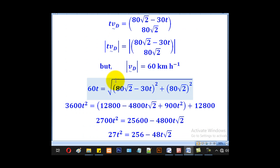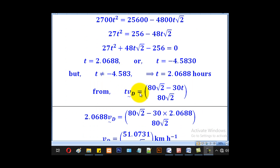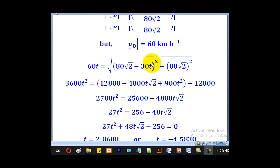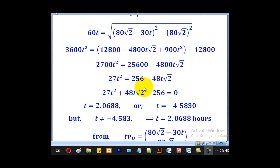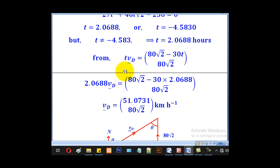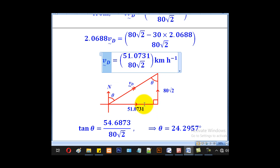Now when we substitute our T in this equation, we shall come up with velocity of D as (51.0731, 80√2). So horizontally 51.0731, vertically 80√2. Then from start to end will be our velocity of D.